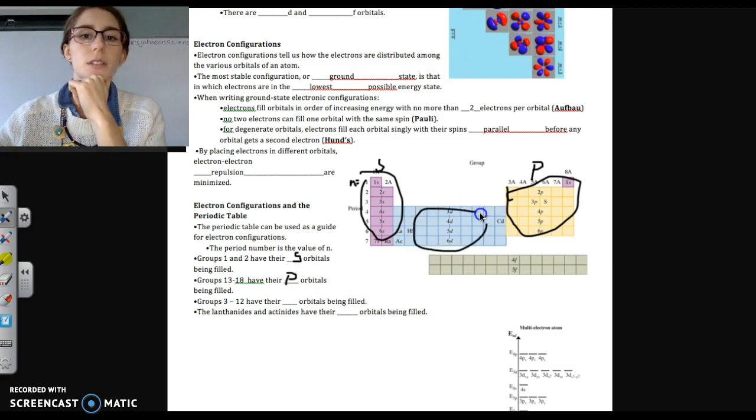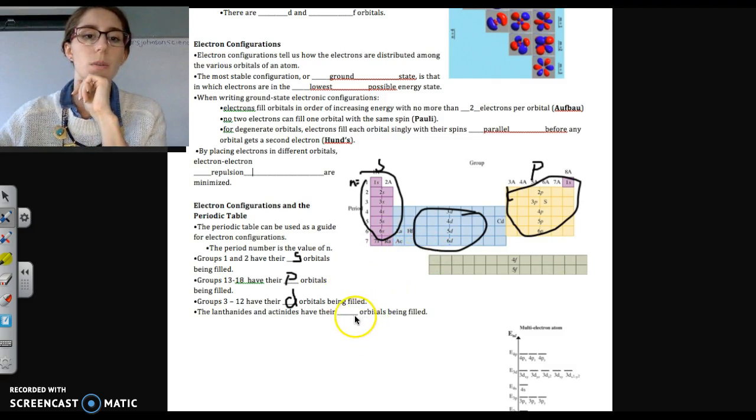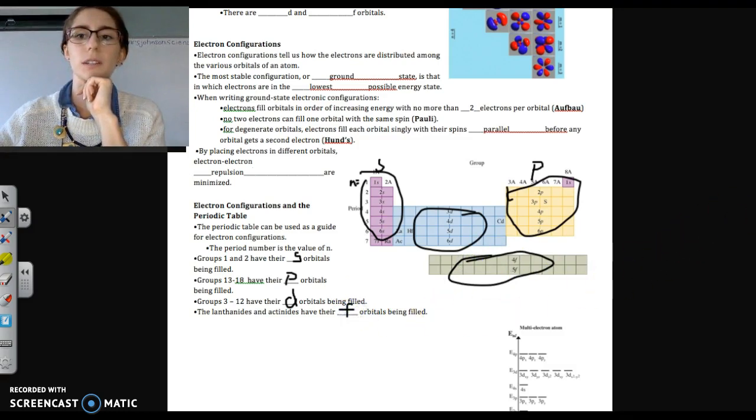And then 3D, which is in the middle transition elements, this is the D block. Or sorry, groups 3 through 12 transition elements, they're the D block. So their valence shells usually end with the D orbitals being filled. And then lanthanides and actinides down here, or rare earths, they're our F block. So they end with F orbitals being filled.